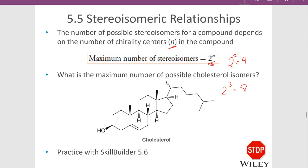For cholesterol, there are 8 chiral centers, giving 2^8 = 256 possible stereoisomers. That doesn't happen in biology — your body produces only one enantiomer of cholesterol exclusively — but chemically there are 256 possible stereoisomers for cholesterol.